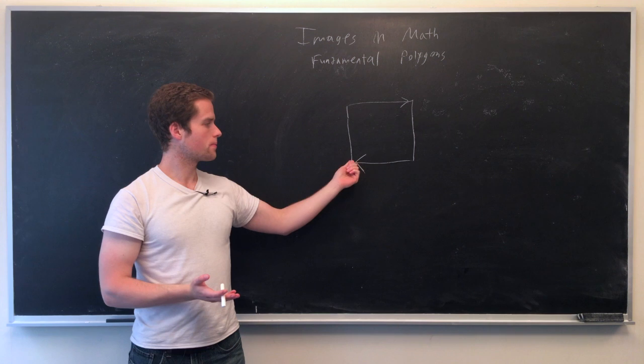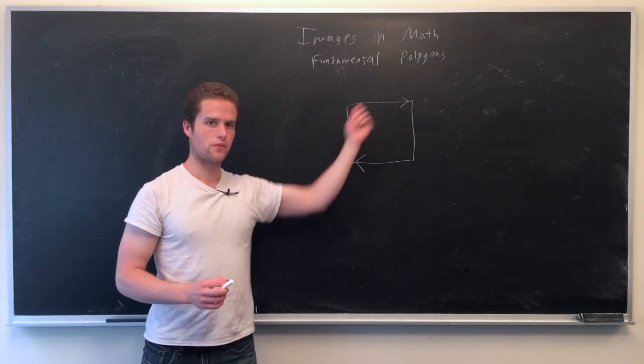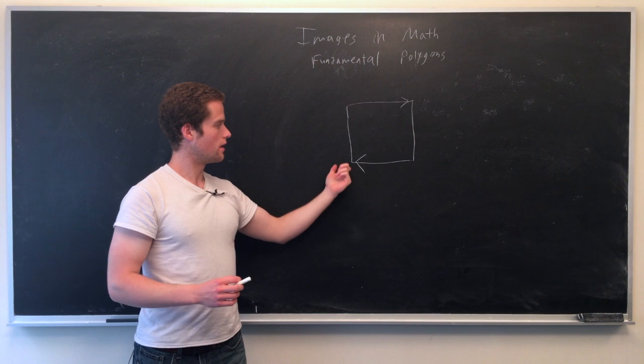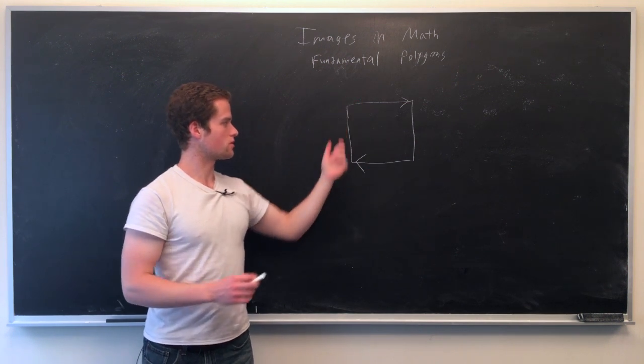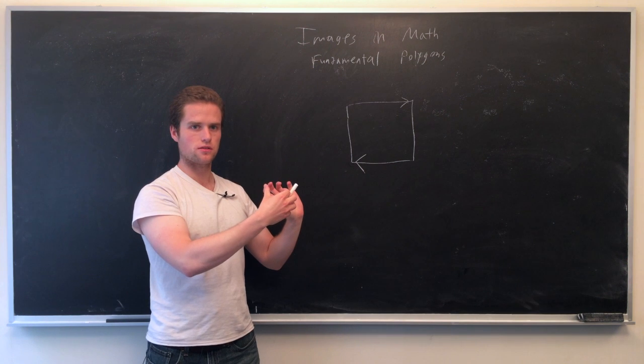Now if we identify, so instead of this point goes to this point, we go from opposite point to opposite point, and then this point to this point, so we identify these edges, but they're kind of reversed of each other, that will give us a Möbius strip.